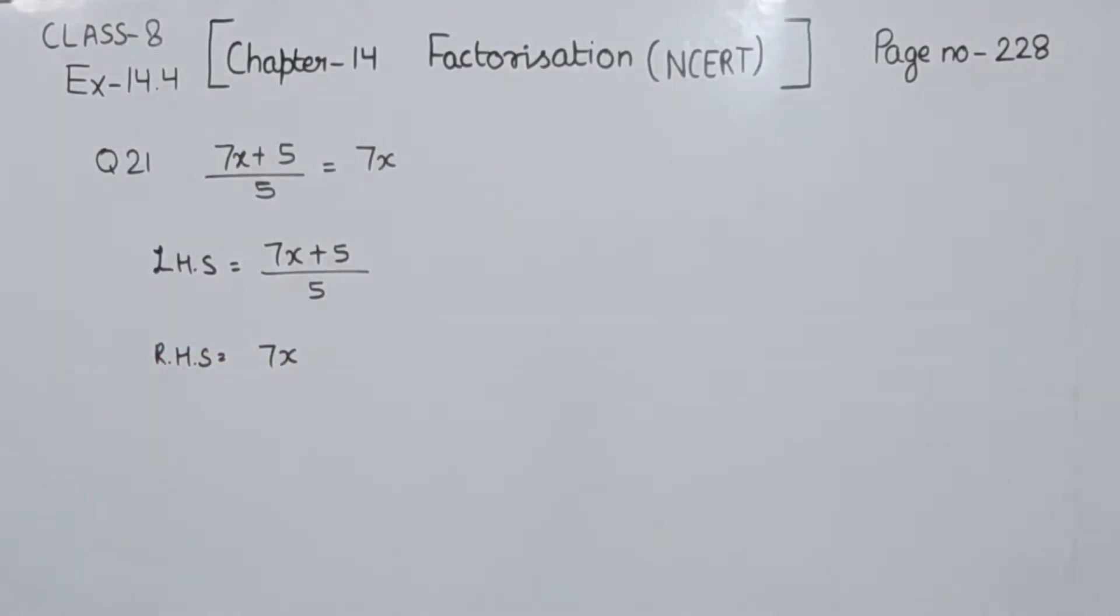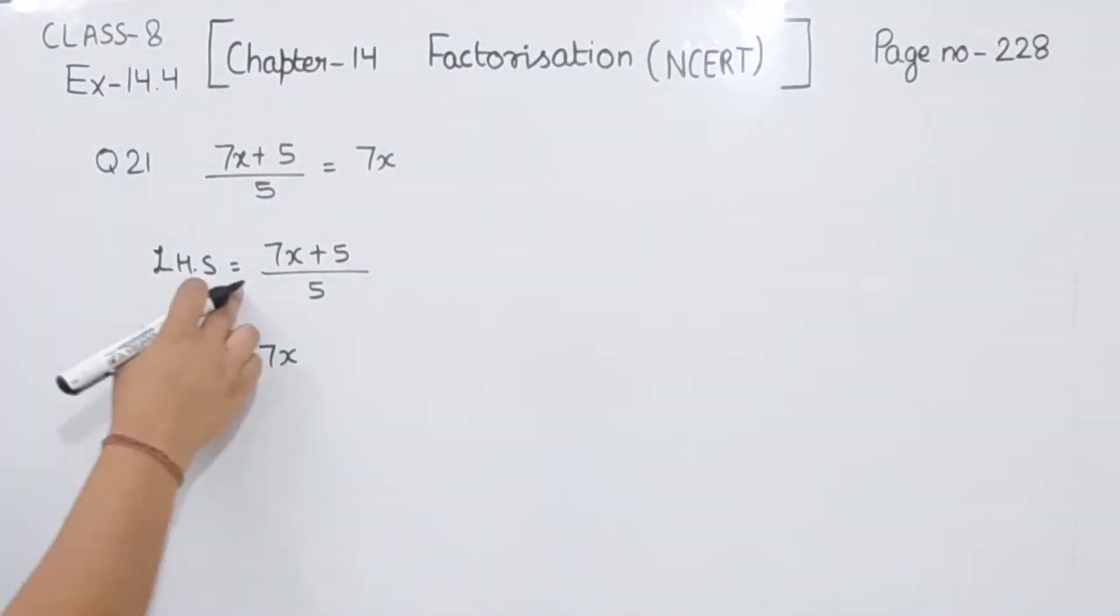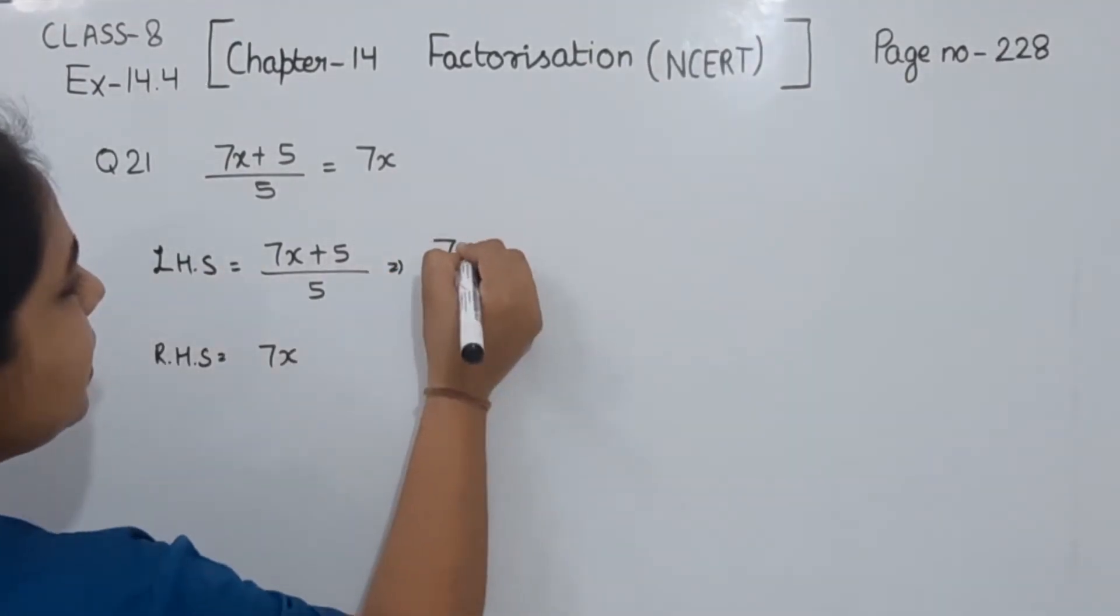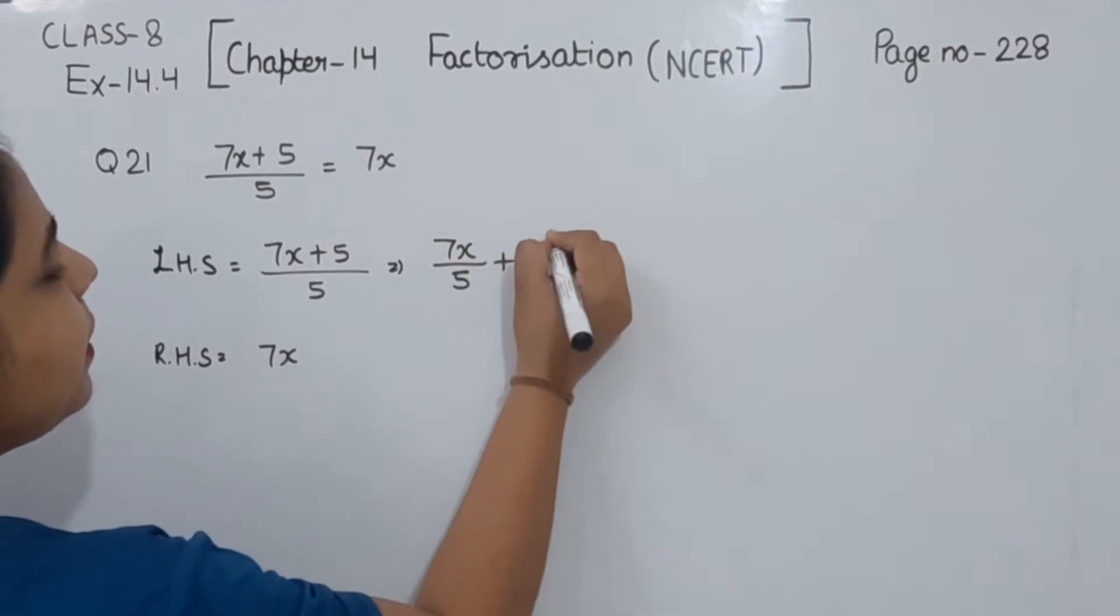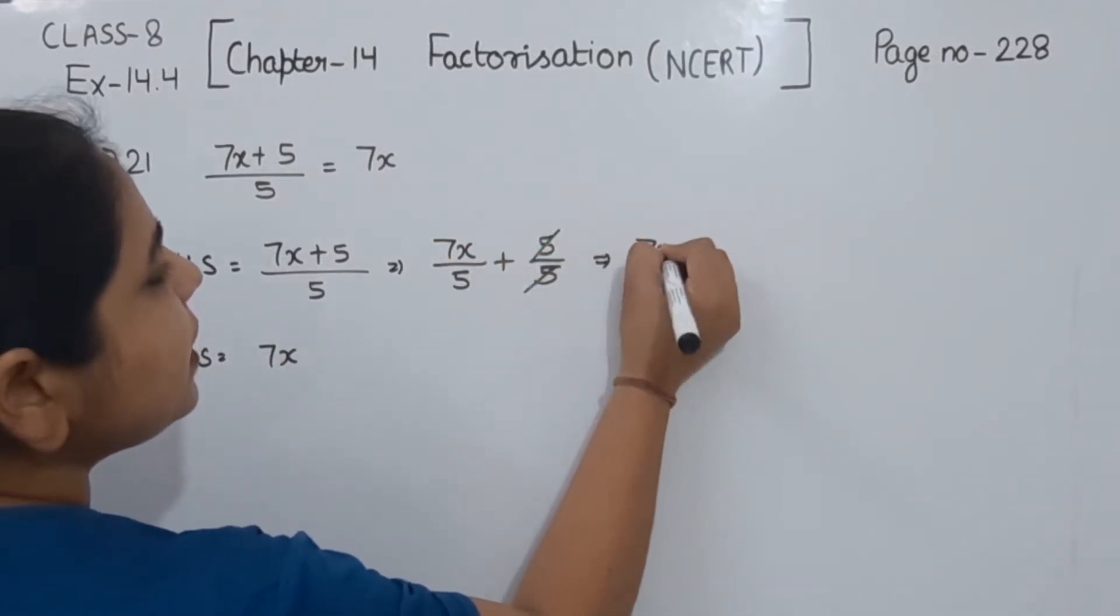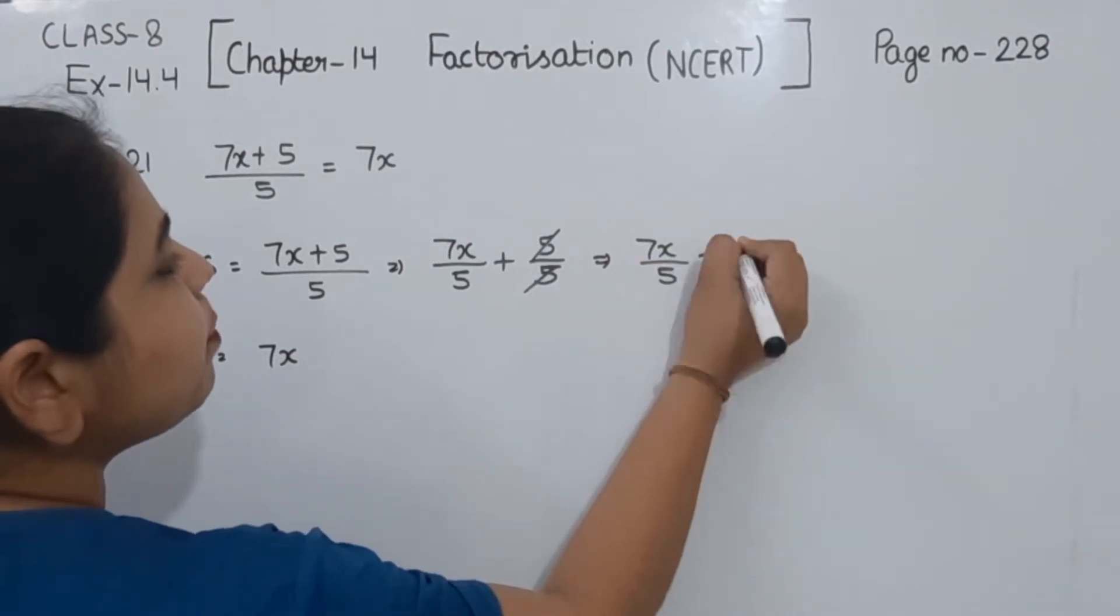Clearly, first we are going to solve this. This becomes 7x divided by 5 plus 5 divided by 5. So 5 cancels from 5. This becomes 7x divided by 5 plus 1.